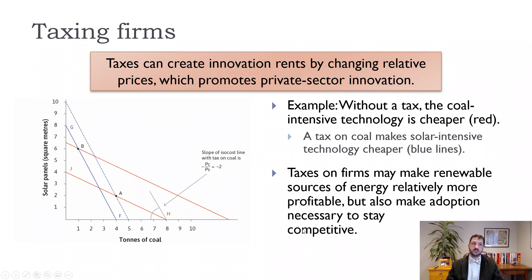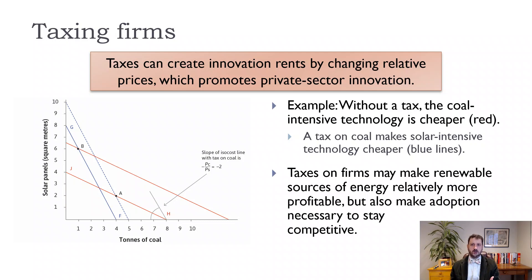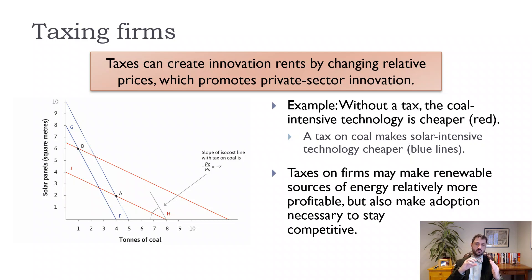Another approach is a tax on the polluting industry — very similar to the Pigouvian tax. We saw this graph in chapter two, where it was about substituting coal for labor. Now we want to get rid of the coal because it has a negative externality, and substitute in solar panels. Putting a tax on coal produced will shift the isocost line and make other technologies more competitive. The danger is that the competing industry assumes the tax will stay and doesn't try to get cheaper, so you want enough competition to ensure lower and lower prices.